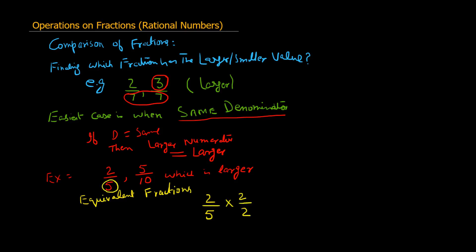If we multiply the numerator and denominator by the same whole number, we get an equivalent fraction. We are not changing the value of this fraction. So we get 4 divided by 10, which is the same as 2 divided by 5, but the advantage is that now it has denominator 10, which is the denominator of the other fraction we are comparing to.